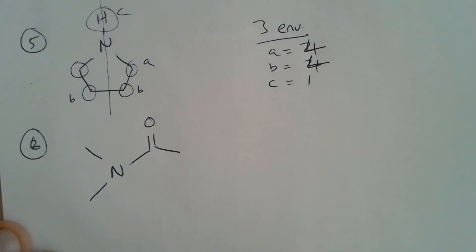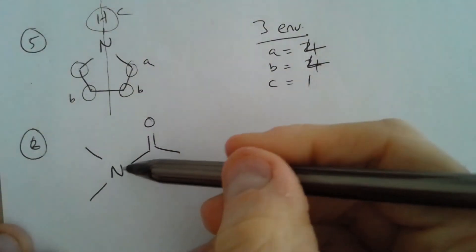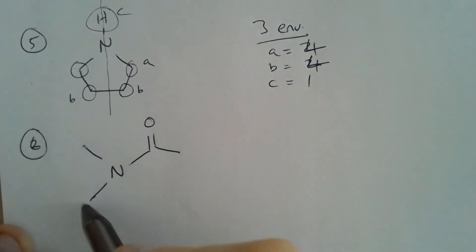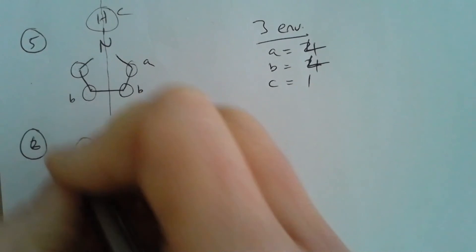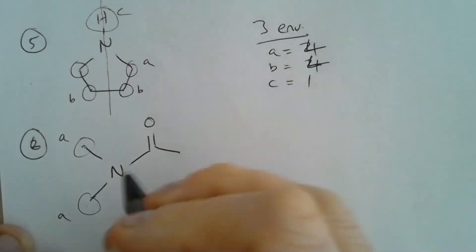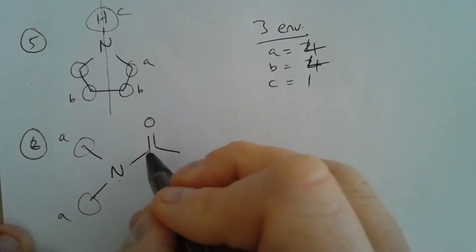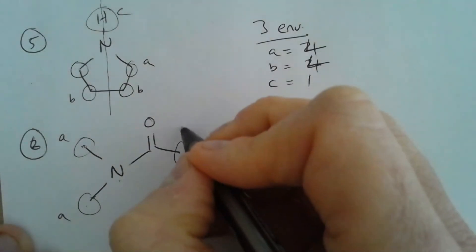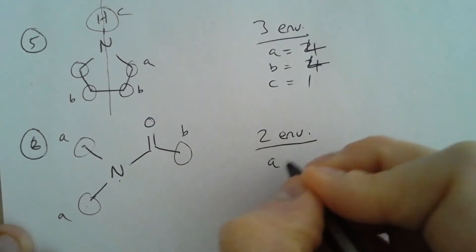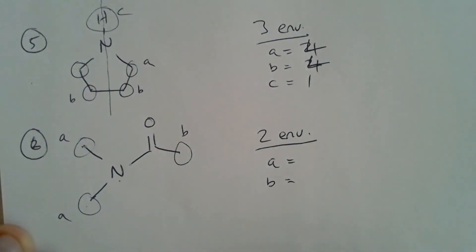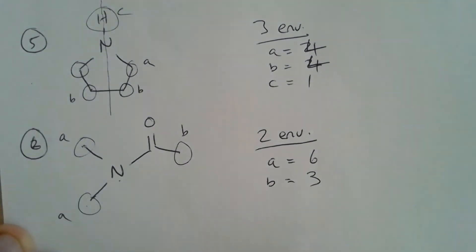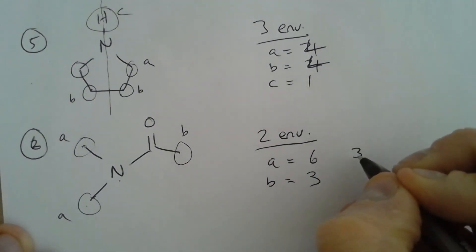Question six: the relevant bond can rotate, meaning the protons in one group are equivalent to each other, giving environment A. There are no hydrogens on the other atoms in question, so in fact this molecule has only two environments — with integrals of six and three respectively.